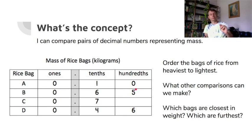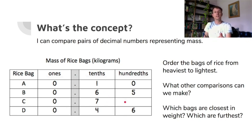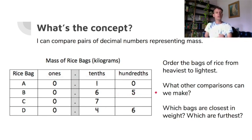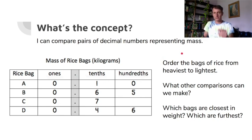What other comparisons can we make? Rice bag C is seven times heavier than rice bag A. We can also find how much heavier each bag is than another — seventy hundredths is five hundredths more than sixty-five hundredths. Which bags are closest in weight? Seventy and sixty-five hundredths — only five apart. The heaviest and lightest — seven tenths compared to one tenth — are furthest apart.